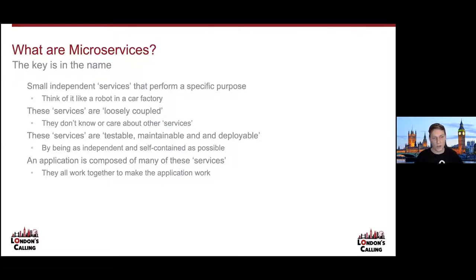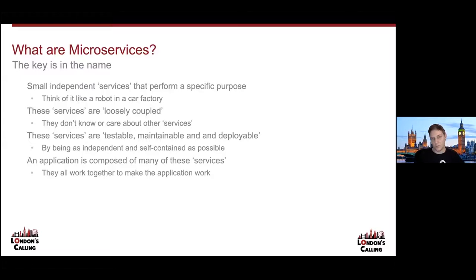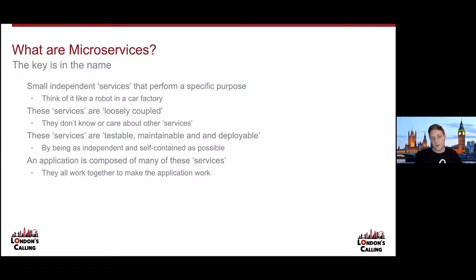Let's go back to the robot in a car factory analogy. You're building a car, you have a car factory, you have many robots that do lots of different things — think of these robots as your services. You might have a robot that welds, you might have a robot that paints. Both perform a specific purpose and don't really know or care about one another. They can be swapped out, maintained, or changed independently. If you need a new welding robot or an improved painting robot, both can be swapped without the other robots knowing. But without all of these little robots working together, you don't have a car.